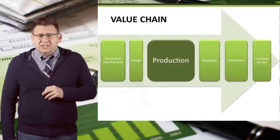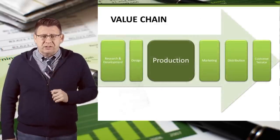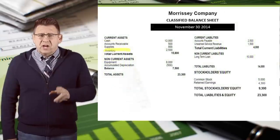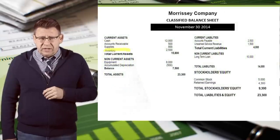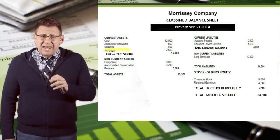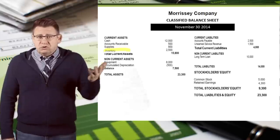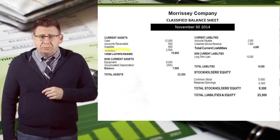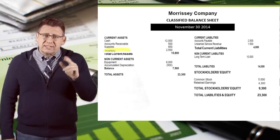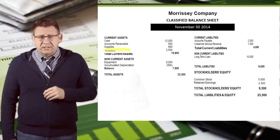The product costs incurred in the production stage are not expensed when incurred. These costs are debited to an inventory account. The costs will remain as assets until the goods are sold, which could be in subsequent periods, and then we would record the cost as cost of goods sold and expense.